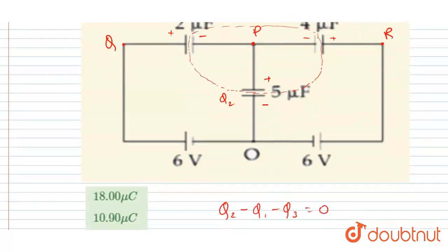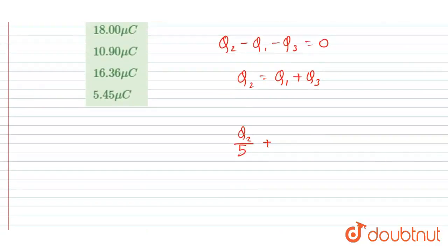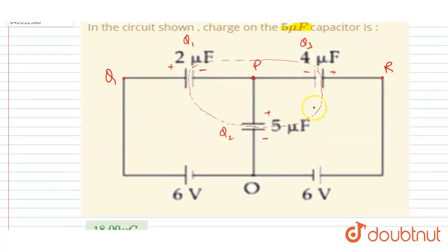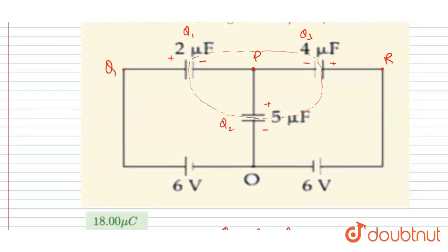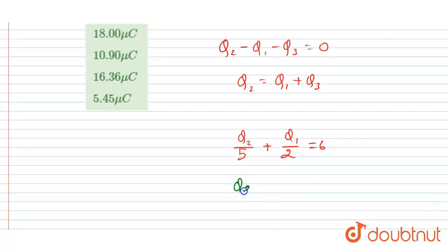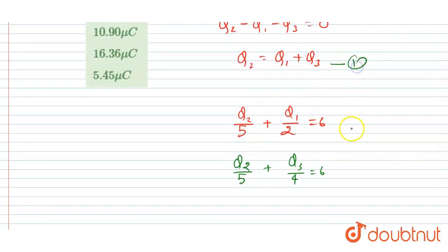Going across this, it will be q1 by 2, and that would equal 6. So I write: q2 by 5 plus q1 by 2 equals 6. Now for the other loop, going from O to P to R to O, across the 5 microfarad capacitor the potential drop will again be q2 by 5, and across this it will be q3 by 4, equaling 6. So: q2 by 5 plus q3 by 4 equals 6.